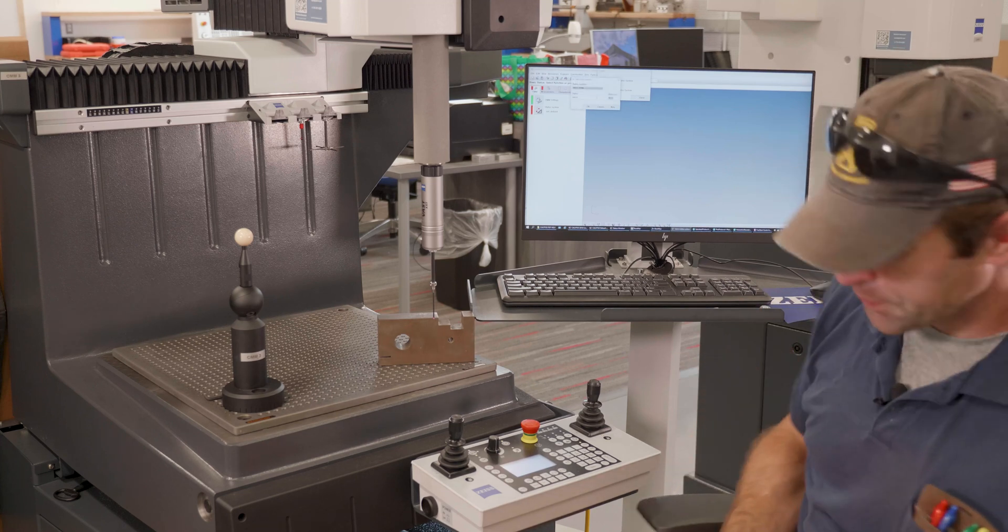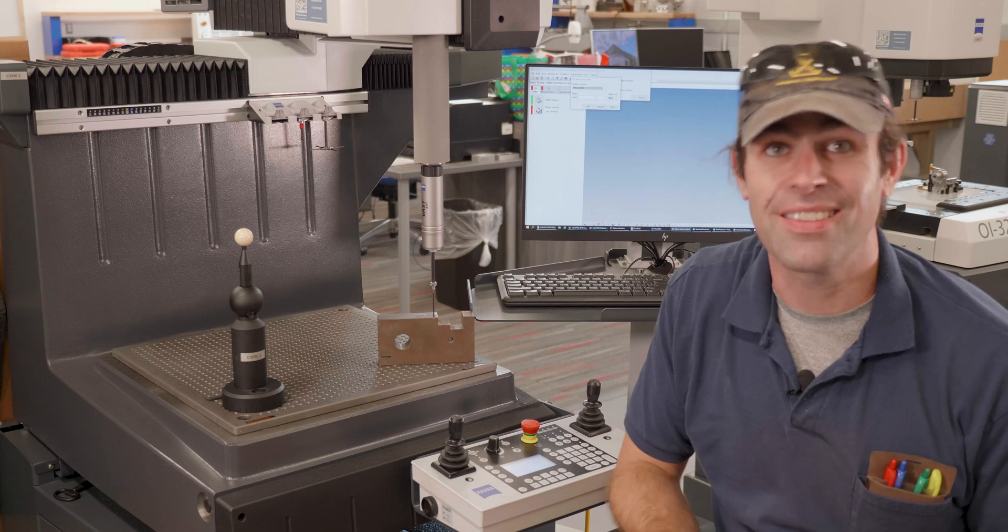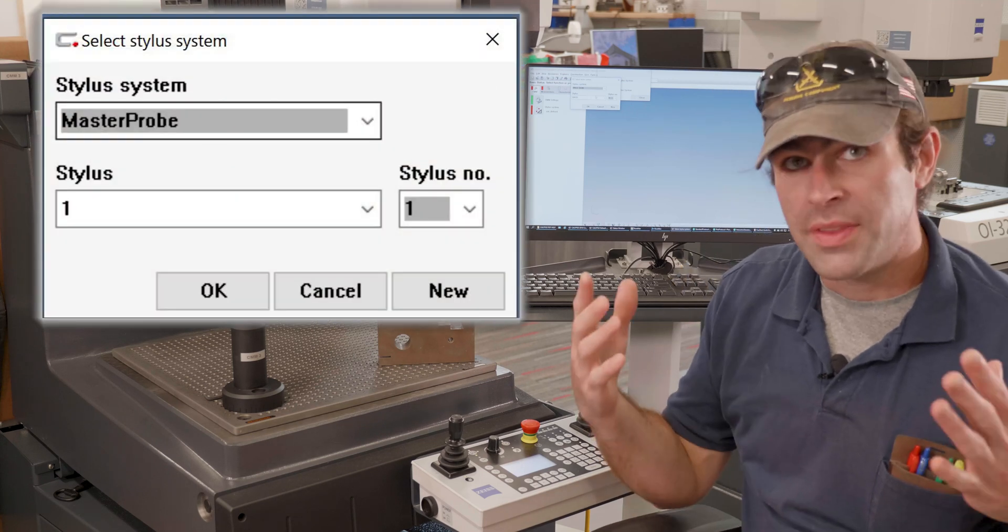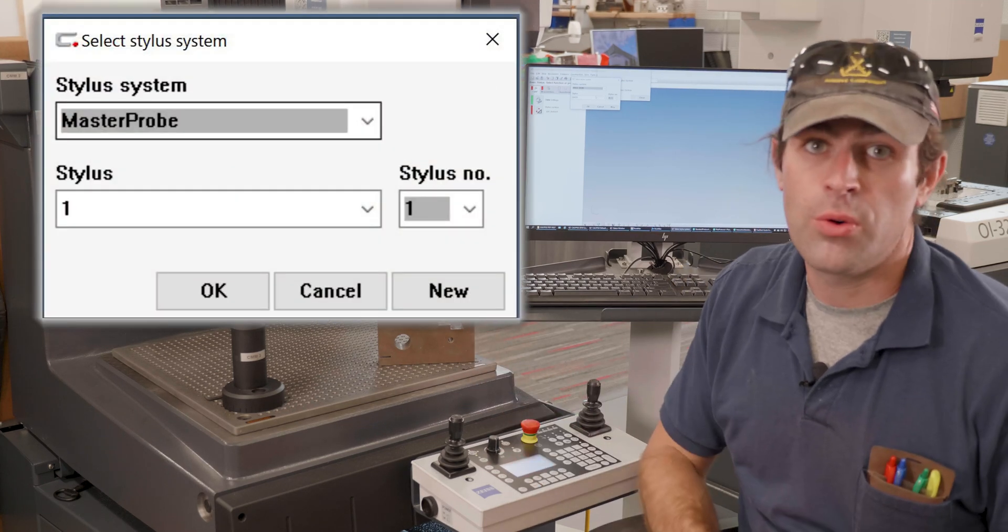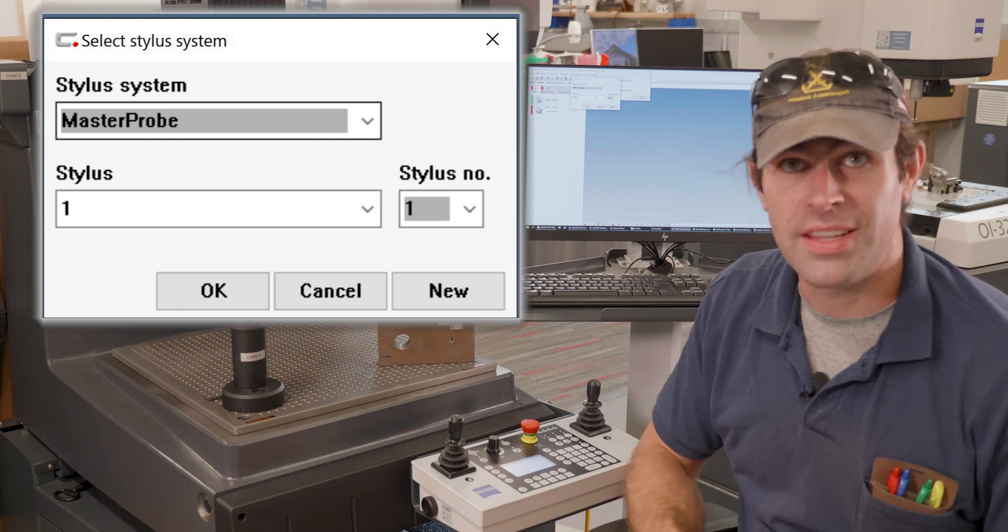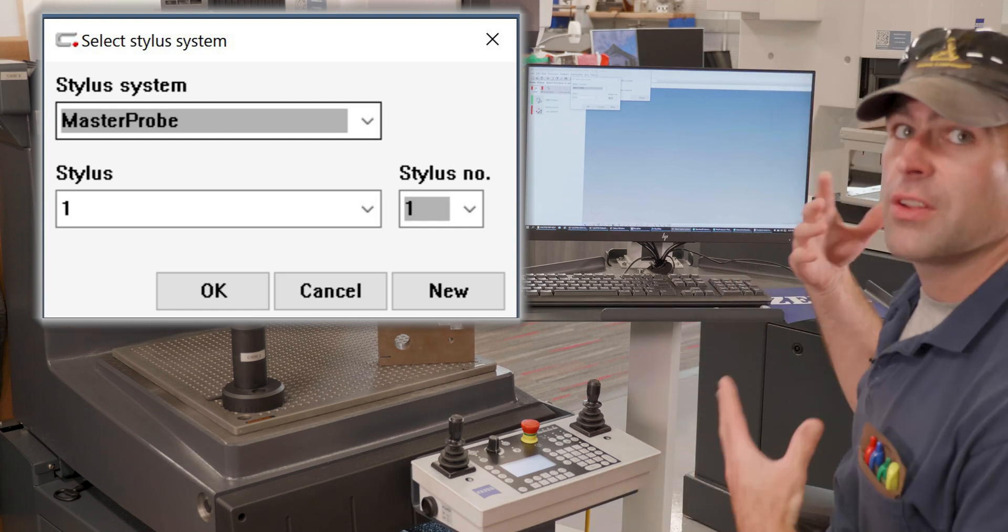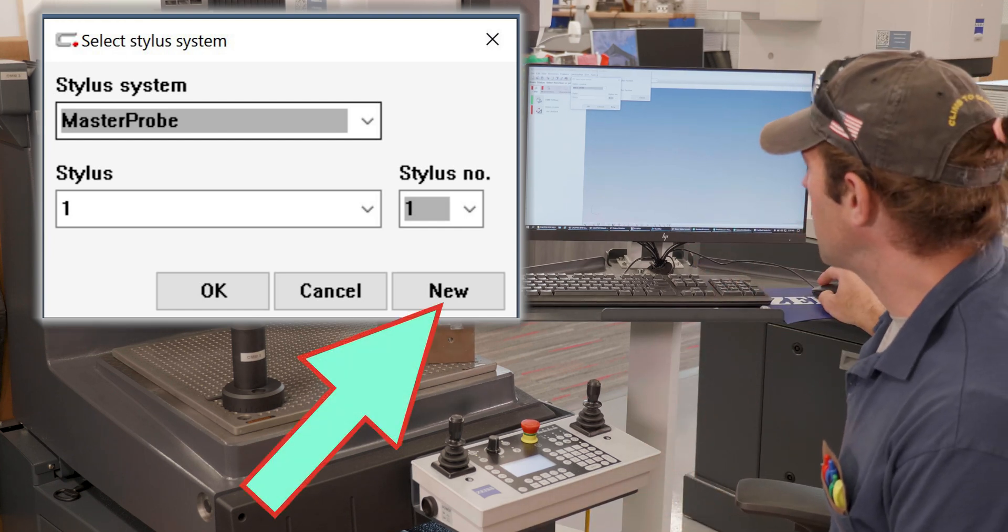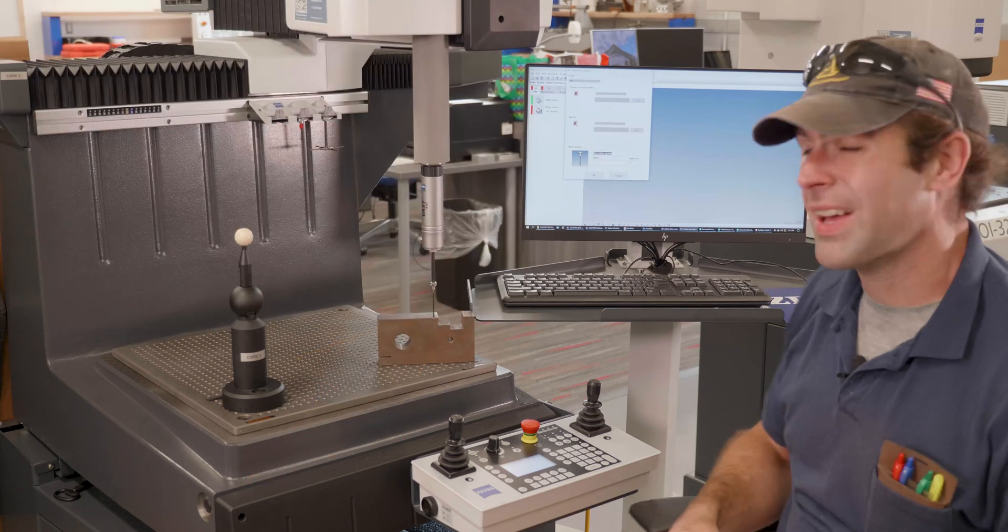Now it's going to ask us to select a stylus system. This stylus is totally unknown to the computer. Say we just put it together. We're going to go to new.